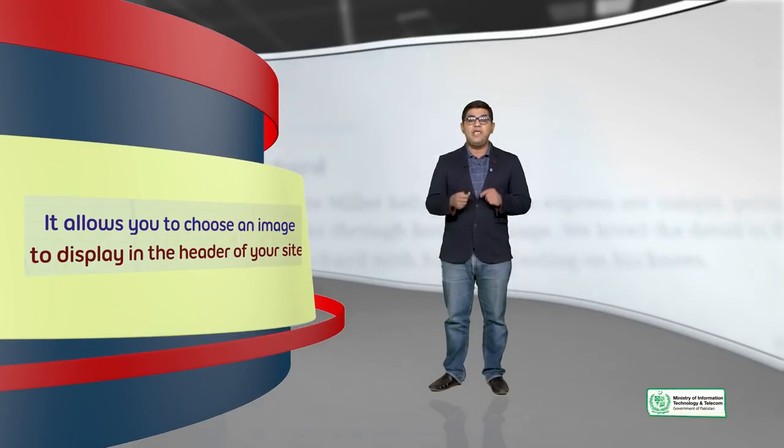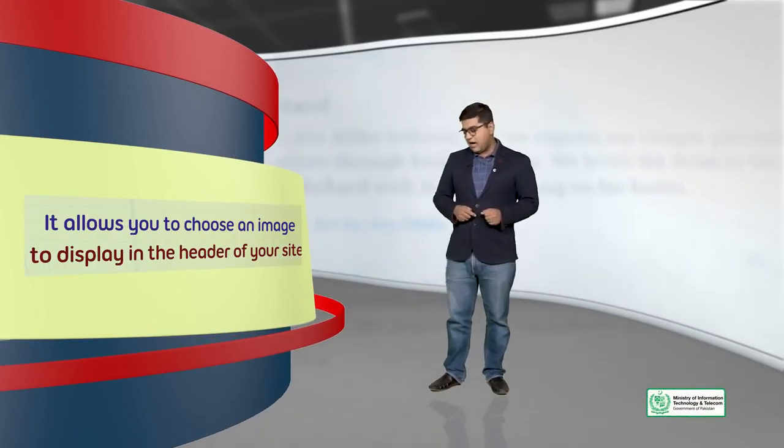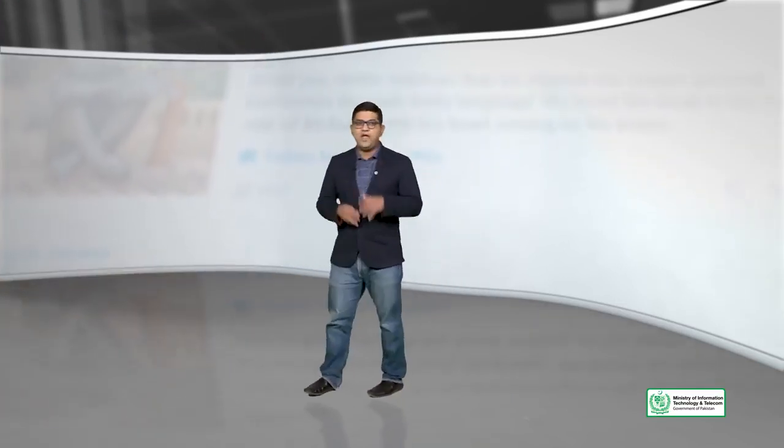You need to be mindful of what things you show and what things you don't show in your website header. Regarding the WordPress header, the header menu option will only be available if your theme allows this option to be shown. It allows you to choose an image to display in the header of your site. Every theme has its own way of showing the header menu and what's editable there.